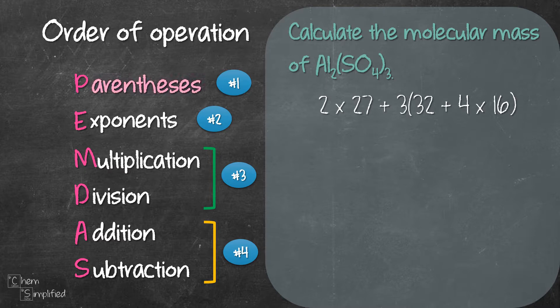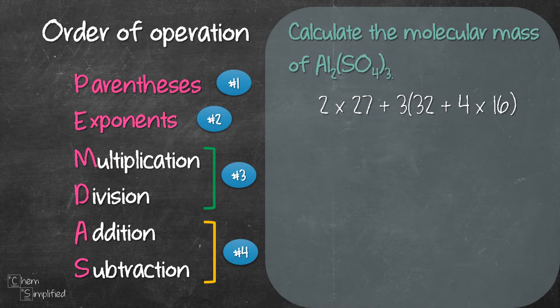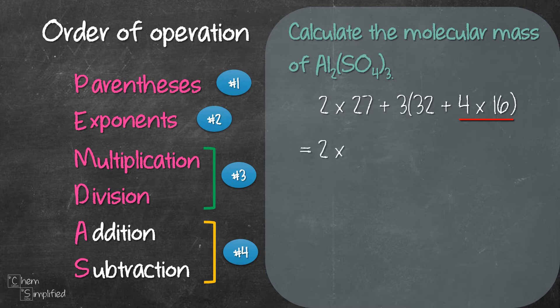Step 1 of PEMDAS is look for parentheses. There we go. We have a bracket at the end so let's focus on solving everything inside that bracket. 32 plus 4 times 16. Next we look for exponent. We don't have any in this equation so we move on to the third step. We look for multiplication and division. We have 4 times 16 inside the bracket so let's solve that. That's 64.